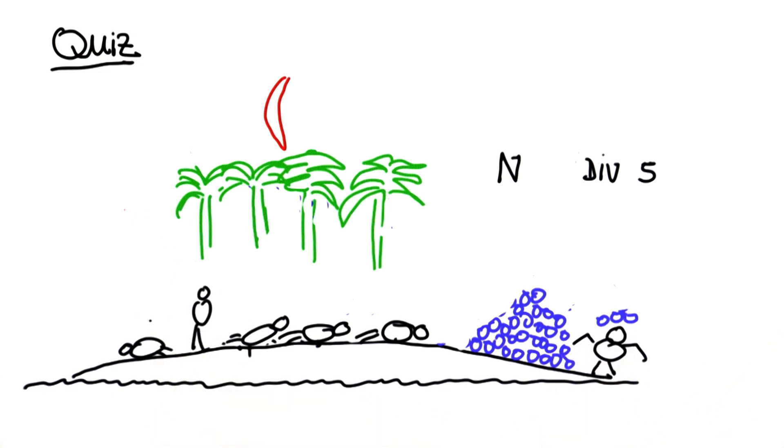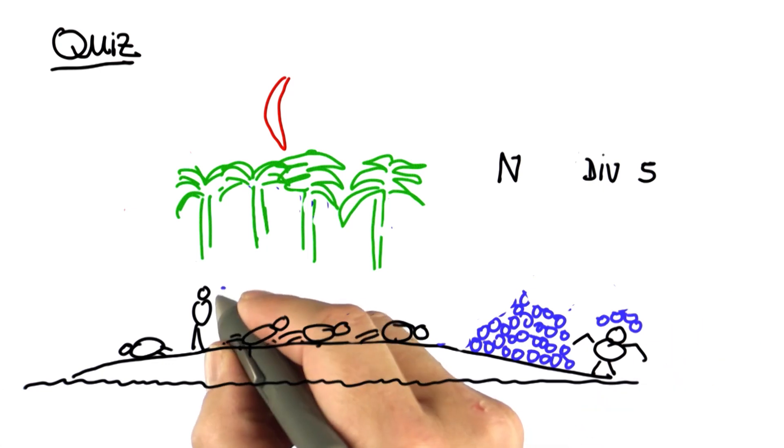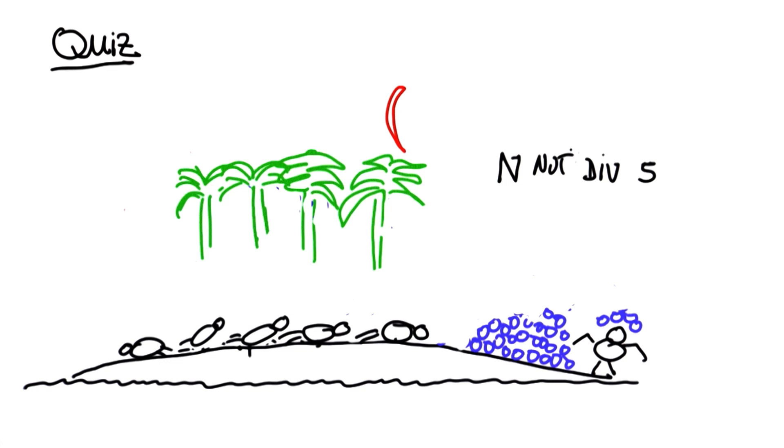The fourth guy wakes up. Same story. He has to give one to the monkey. He takes his fifth, which of course now is much smaller than the original fifth, and hides it and falls asleep.